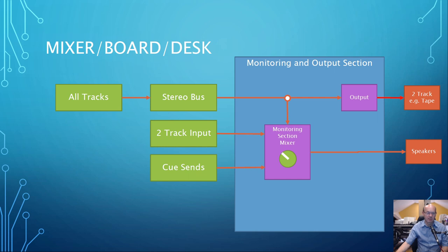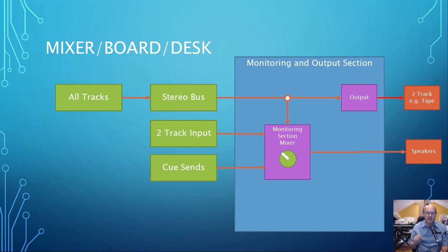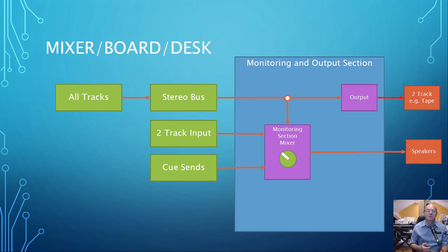Cubase works like a mixing board — you have a dedicated monitoring output section. All tracks go to the stereo bus and from there to the output, which on a big board goes to the tape machine or whatever media you record your master on. But you also split the signal — you can see the white dot — and go to the monitor section where you have a volume control and send it to the speakers. On a big board you also have a two-track input and Qsense coming into the mixing section so you can select what you want to hear without it going over the stereo bus.